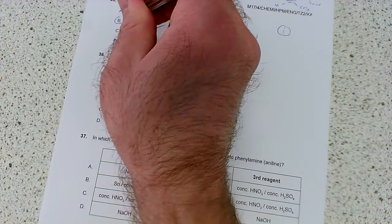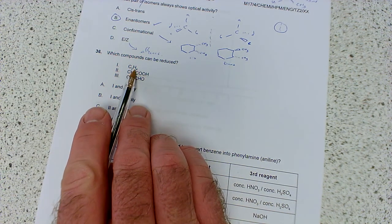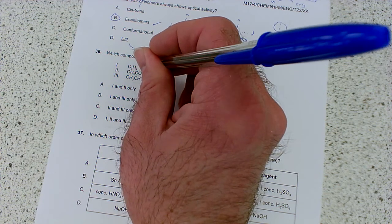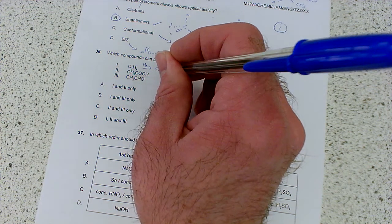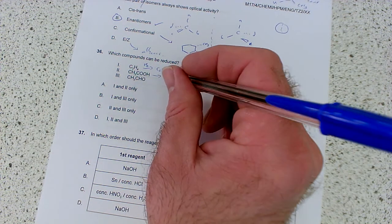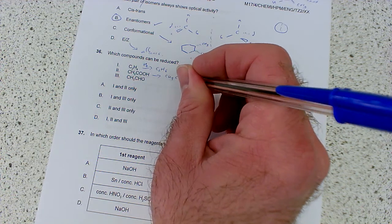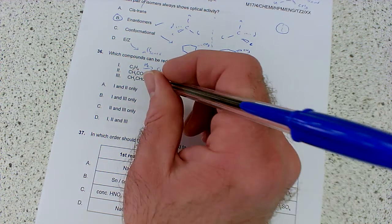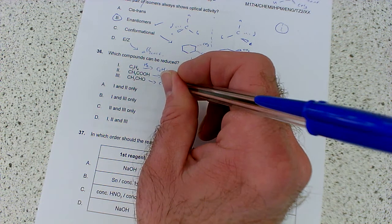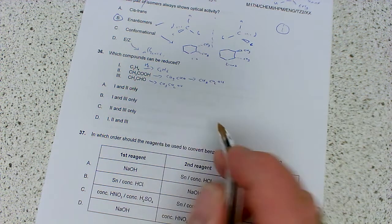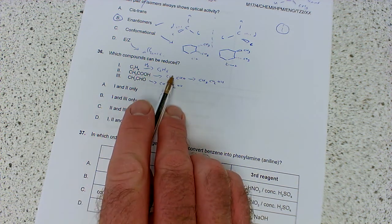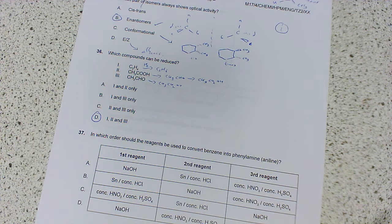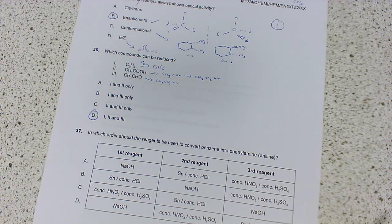Which compounds can be reduced? C2H4 is ethene - it can be reduced with hydrogen to form ethane C2H6. This could be reduced to an aldehyde then further to an alcohol. The aldehyde can be reduced to an alcohol. These can be done with lithium aluminum hydride, the aldehyde with sodium borohydride. All three can be reduced.